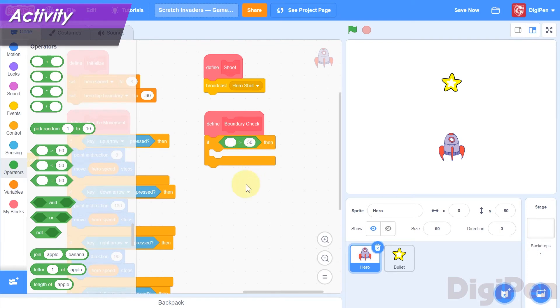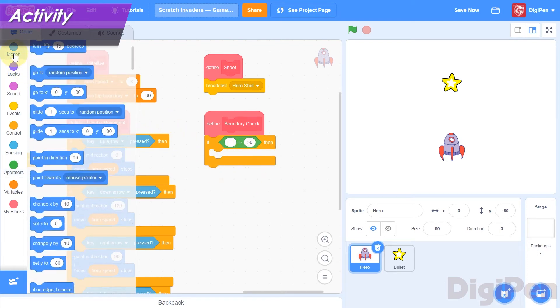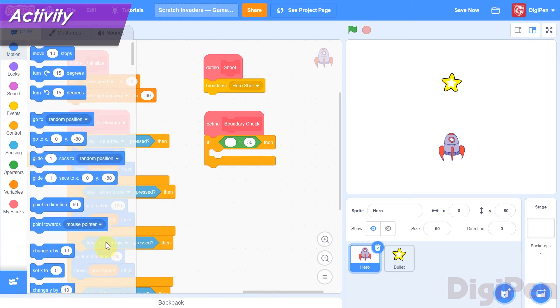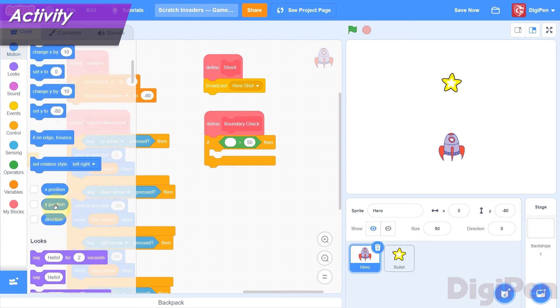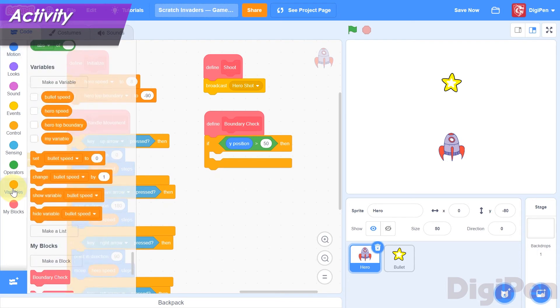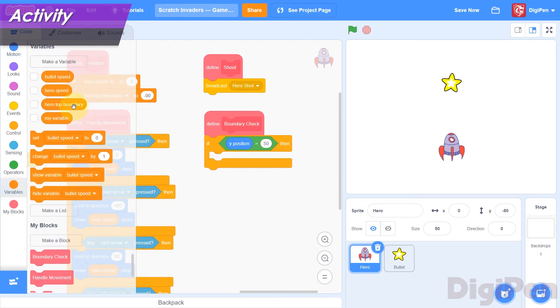Click the Medium Blue Motion category, and find the Y Position Reporter block. Drag and drop it into the left value field of the greater than block. Now click the orange Variables category, and find the Hero Top Boundary Reporter block. Drag and drop it into the right value field of the greater than block. This block now reports whether the hero's position is above the top boundary.